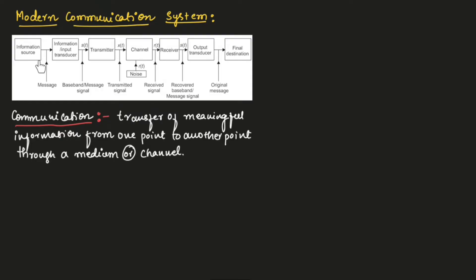The information source provides the message signal to the input transducer. The output of the input transducer will be a baseband signal, also known as a message signal, that is given as input to the transmitter. The transmitter will then provide the transmitted signal.